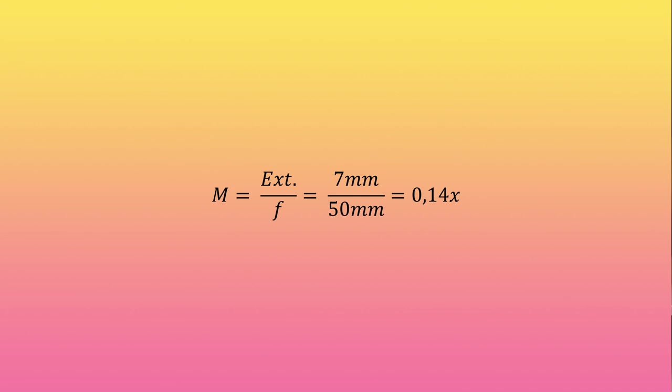For example, my 50 f1.4 Nikkor is at 50 mm from the sensor when the lens is set at infinity focus. On the other hand, when I set it to the minimum focus, the lens moves forward 7 mm away from the sensor. Consequently, the additional extension is 7 mm, and the magnification M will be M equals additional extension divided by focal length, 7 divided by 50 equals 0.14X.